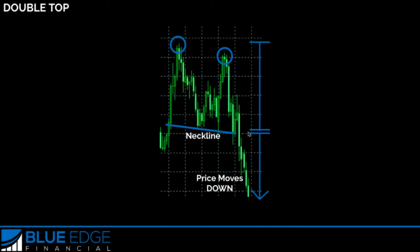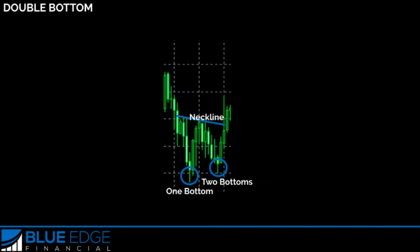Generally for a take profit, it's going to be about the distance from the neckline to the tops, from your entry order on down. So you can put a take profit there, or you can also use a trailing stop to try to ride out the trend a little bit more.